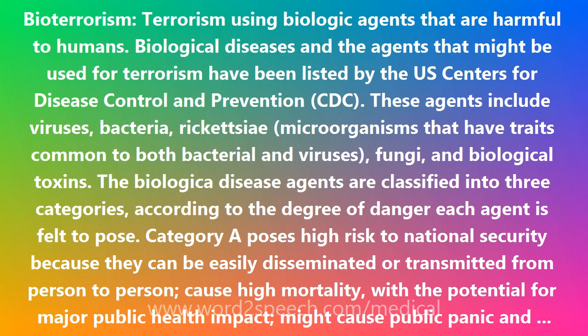Category B agents are moderately easy to disseminate, cause moderate morbidity and low mortality, and require specific enhancements of the CDC's diagnostic capacity and enhanced disease surveillance. Examples of Category B diseases include Q fever, brucellosis, glanders, ricin toxin, epsilon toxin of the gas gangrene bacillus, and staphylococcus enterotoxin B.